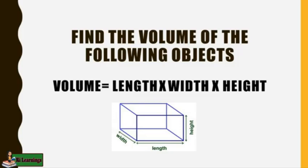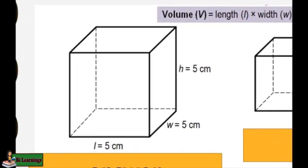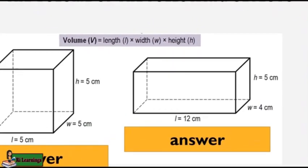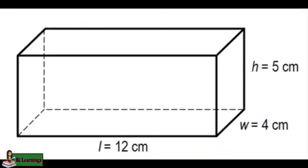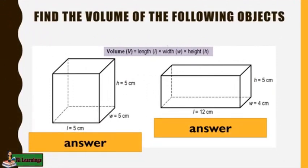I want you to find the volume of the following objects. Use the formula length times width times height. For number one, the height is 5 centimeters, its width is 5 centimeters, and its length is 5 centimeters. What do you think is the volume? I will give you time to compute. For the next figure, the height is 5 centimeters, the width is 4 centimeters, and the length is 12 centimeters. Remember to compute for the volume of an object, multiply the length to its width and height.